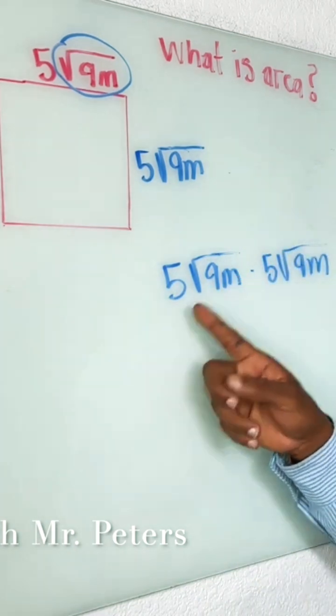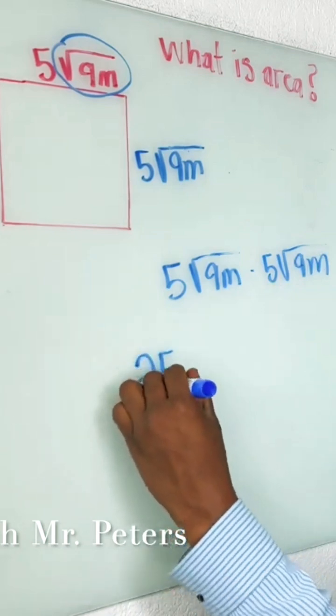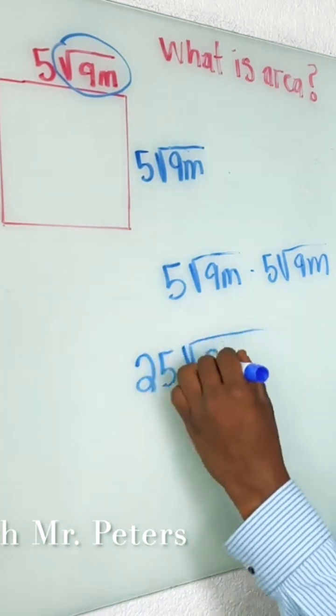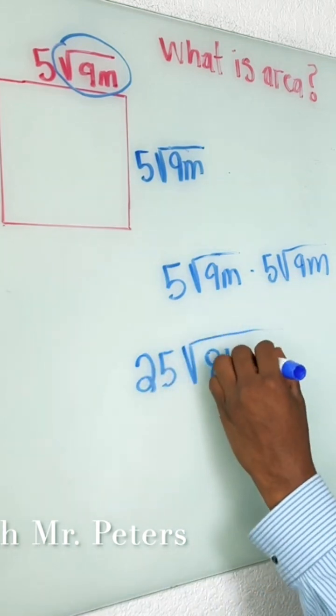Meaning coefficient with coefficient, 5 times 5 gives me 25. Radical with radical, so 9 times 9 gives me 81. M times m gives me m squared.